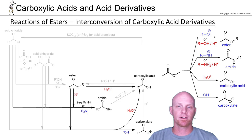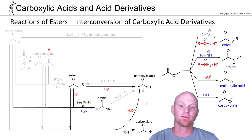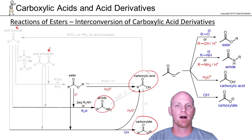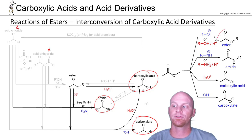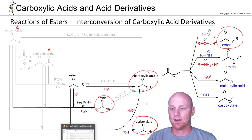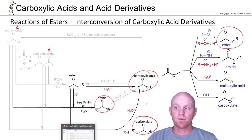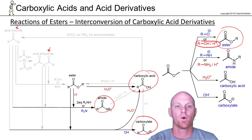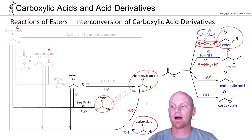Finally, we'll look at the interconversions of the other carboxylic acid derivatives. Notice we can't make the acid anhydride or the acid chloride directly, since they're more reactive than the ester — we can only make what's equally reactive like the carboxylic acid, or less reactive like the amide or carboxylate. You can also turn an ester into a different ester via transesterification. For esters, you're either doing acid catalysis, highlighted in red, or using a strong nucleophile, highlighted in blue.